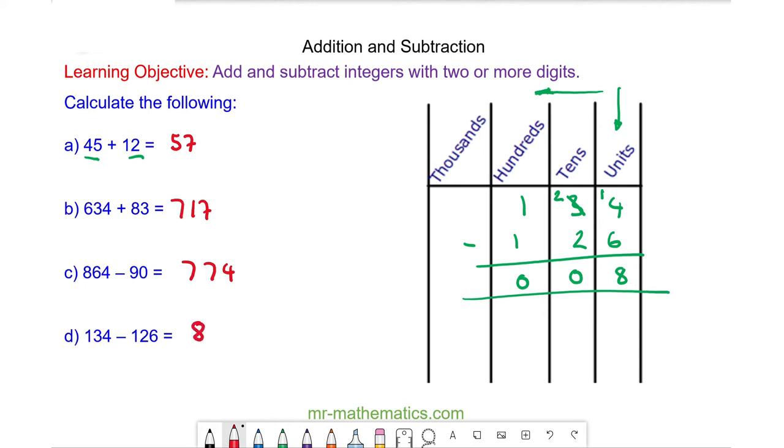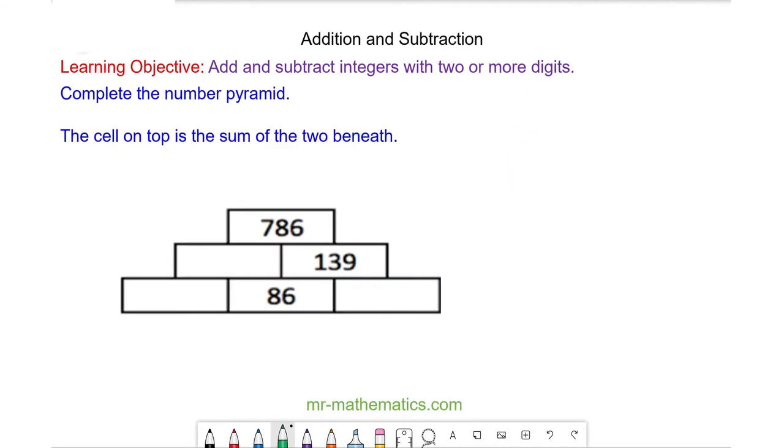Okay, let's try one more problem. So here we have a number pyramid, and the number pyramid works by the two numbers below the cell adding up to make the number above the cell. So this cell here would be the sum of this cell and this cell. 139 would be the sum of this number and this number. Do you want to try and work out the missing numbers? Pause the video and you can resume when you're ready.